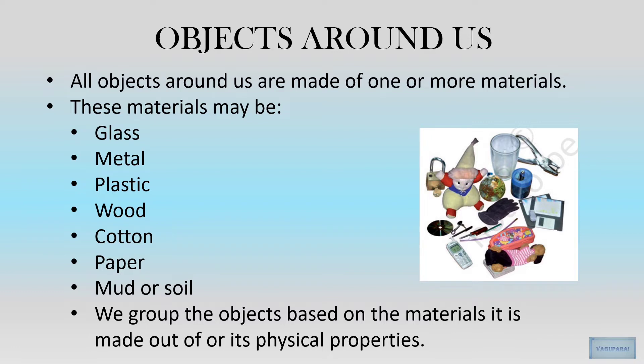There are a lot of materials used to make objects. Some objects are made out of glass, some with metal, plastic, wood, cotton, paper, and sometimes with mud also. We have to know how we are going to group the objects together depending upon the material they are made out of.